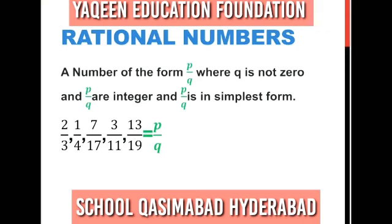One important thing is that there is never zero in the denominator of a fraction. If zero is in the denominator, there will be a math error. As I told you in the last lecture, zero will not come in the denominator.